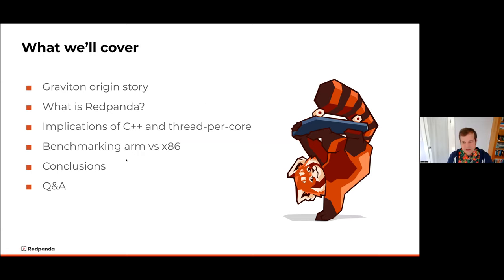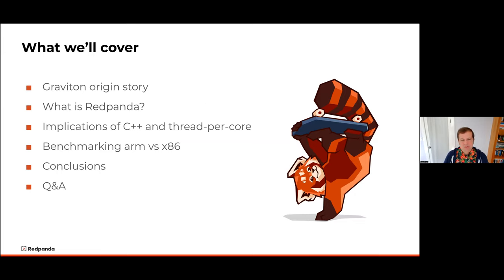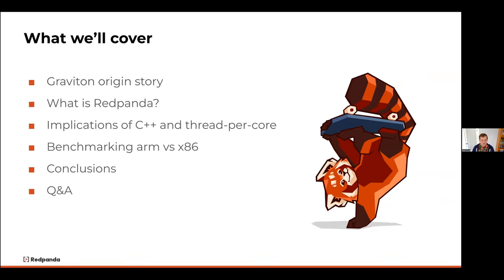Just a quick overview of what we'll be covering: we'll talk about the Graviton story and where that originated from, a bit about Red Panda and why it's interesting in the context of comparing the two architectures. Red Panda is written in C++, so we'll discuss the implications of that and the thread-per-core model. Then we'll get into benchmarking ARM versus x86, talk about conclusions, and answer questions at the end.